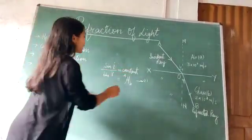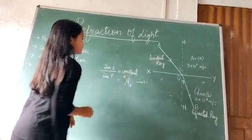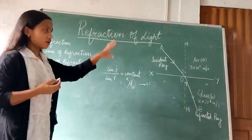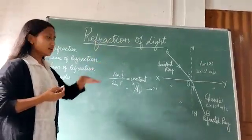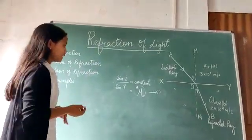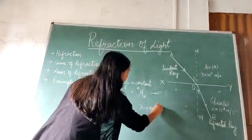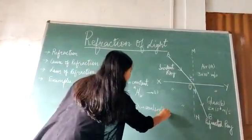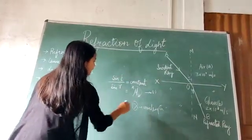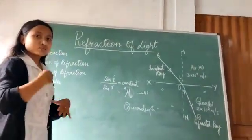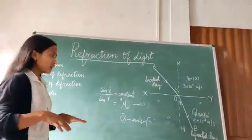And this refractive index, this refractive index, it depends upon the nature of these two media, the media, and the wavelength of light, wavelength lambda. That is, if the wavelength of light is shorter, then this refractive index will be more and vice versa.